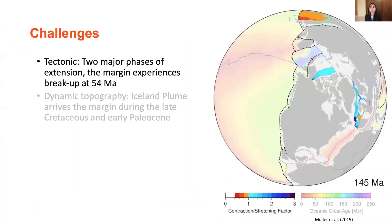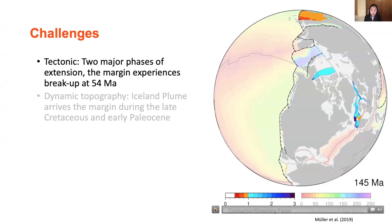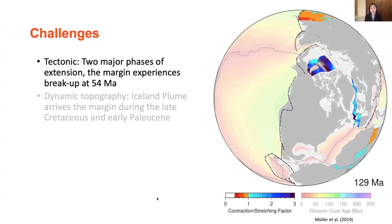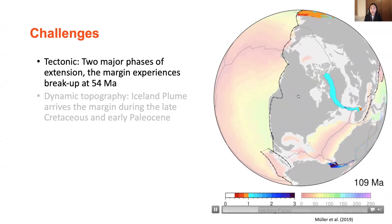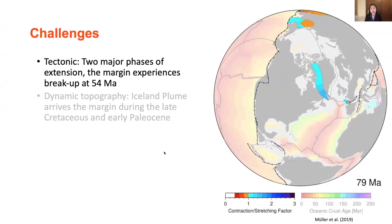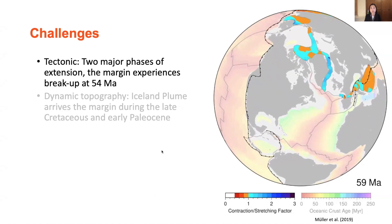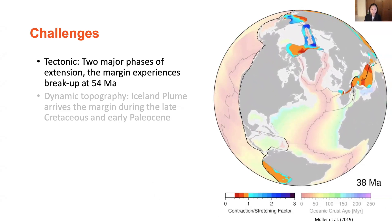The Norwegian margin is a complex system with different factors interacting and controlling sedimentation. It is important to begin by asking: what can drive sedimentation over the post-rift quiescent time? Tectonics can be one major control. Here's a G-plate model showing the contraction stretching factor. Being a passive margin, it experienced phases of extension and rifting with breakup at 54 Ma.